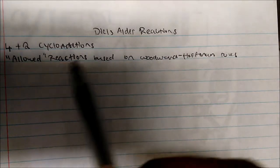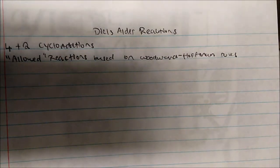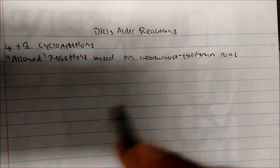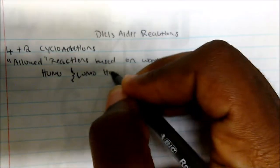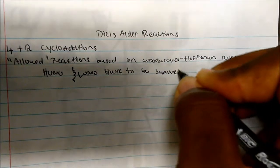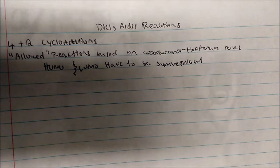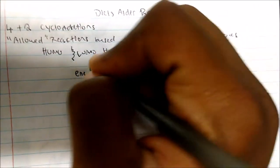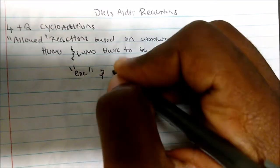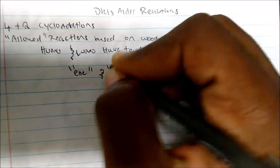I want to focus on Diels-Alder reactions. These are two-cycle additions — allowed reactions based on the Woodward-Hoffmann rules. The Woodward-Hoffmann rules essentially state that the HOMO and the LUMO of these molecules have to be symmetrical. That's the whole idea behind molecular orbital theory and why these reactions will occur. These reactions typically occur with an ene (alkene) and a diene.